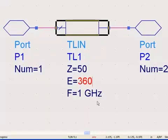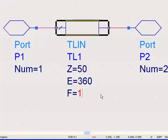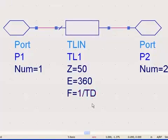First, you set the electrical length to 360 degrees, and then you set the frequency for that delay to be 1 over TD, which is the time delay you want.